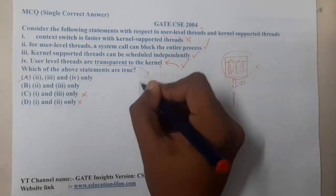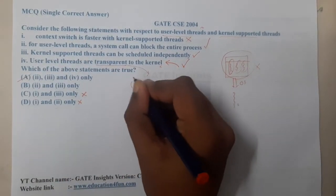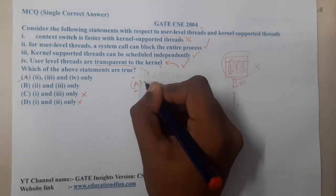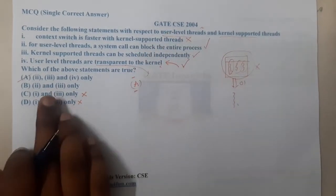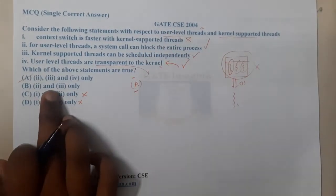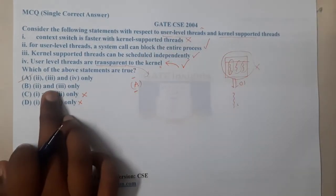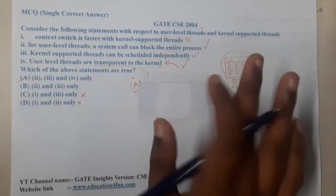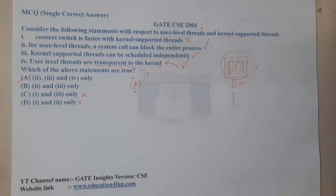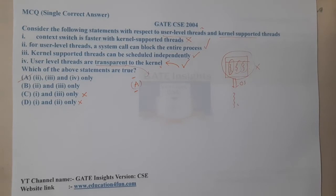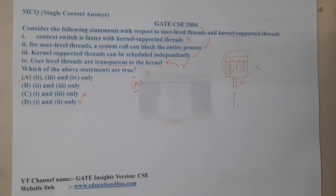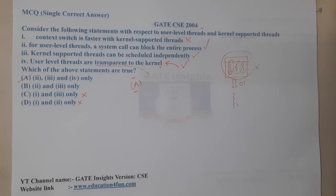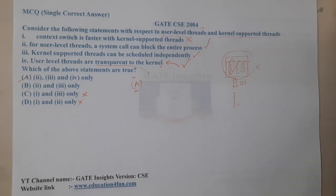With that understanding, option A is the correct answer. When I solved this question the first time, I also incorrectly chose option B, but after solving it multiple times, the concept of transparency became clear. I hope everyone now has a clear idea with respect to this question. In the next lecture, we will continue with the next question.